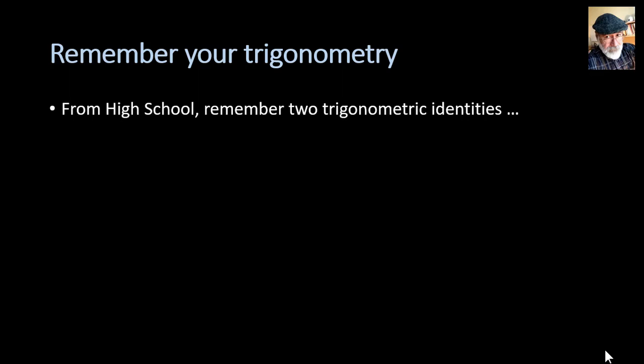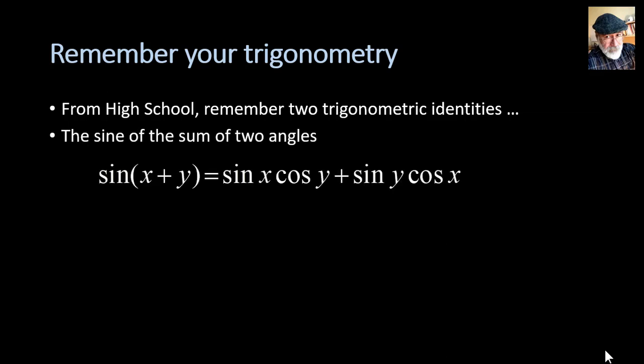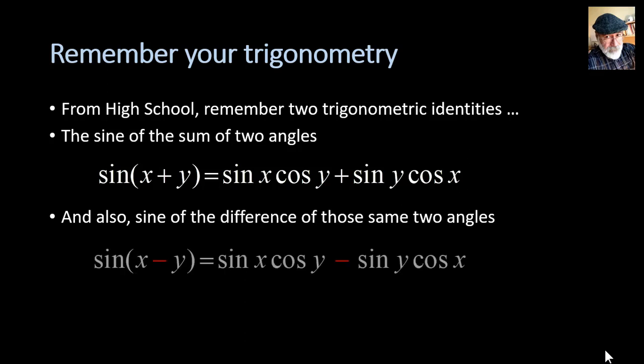Remember your trigonometry in high school. Remember two trigonometric identities to compute the sine of a sum of two angles. Sine of x plus y is sine x cosine y plus sine y cosine x, and also its companion, the sine of the difference of those two same angles.